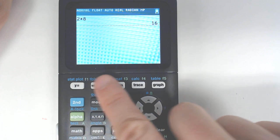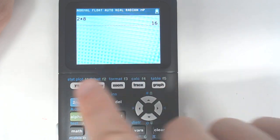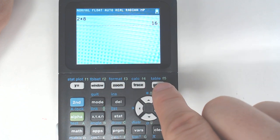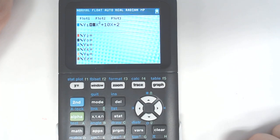But if you want to use any of the graphing features, you need to use these buttons at the top, which are the Y equals, the window, zoom, trace, and graph button. So basic graphing: